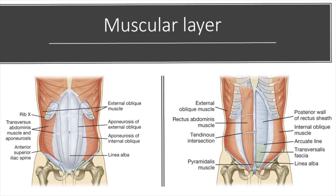Those are the three flat muscles. You also have two groups of vertical muscles: the rectus abdominis, which you may know as your six-pack muscles, and a small muscle group called the pyramidalis, which you can see right over here.